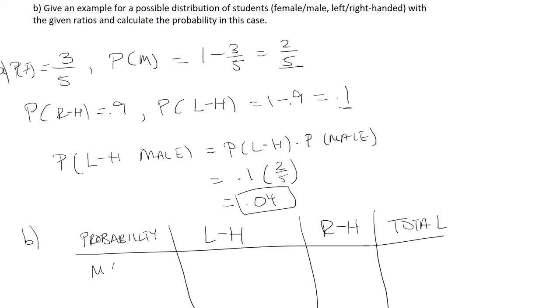This is the male row, and this is the female row. And we also need the total row.